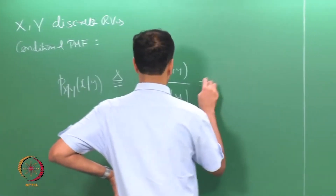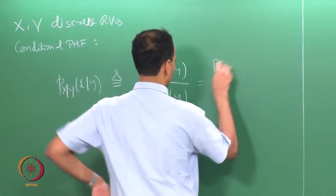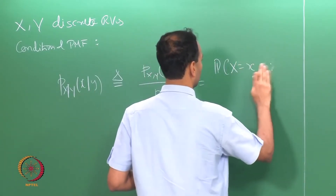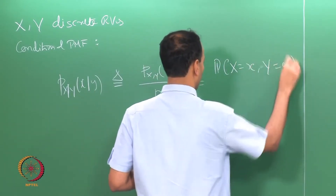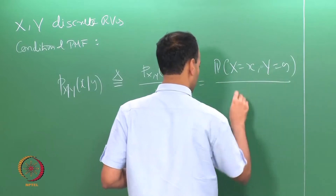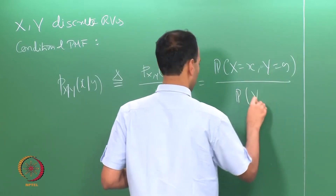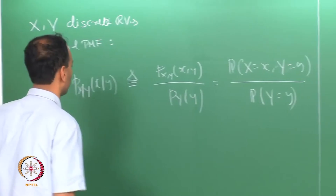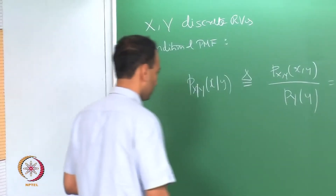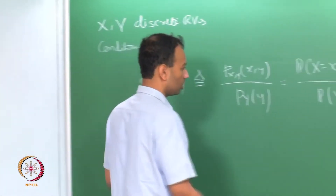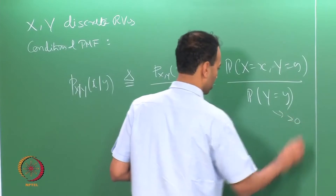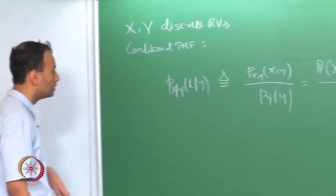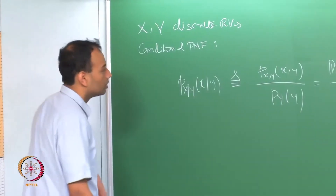This is just the probability that X equals little x and Y equals little y, over the probability that Y equals little y — assuming that this denominator is positive.